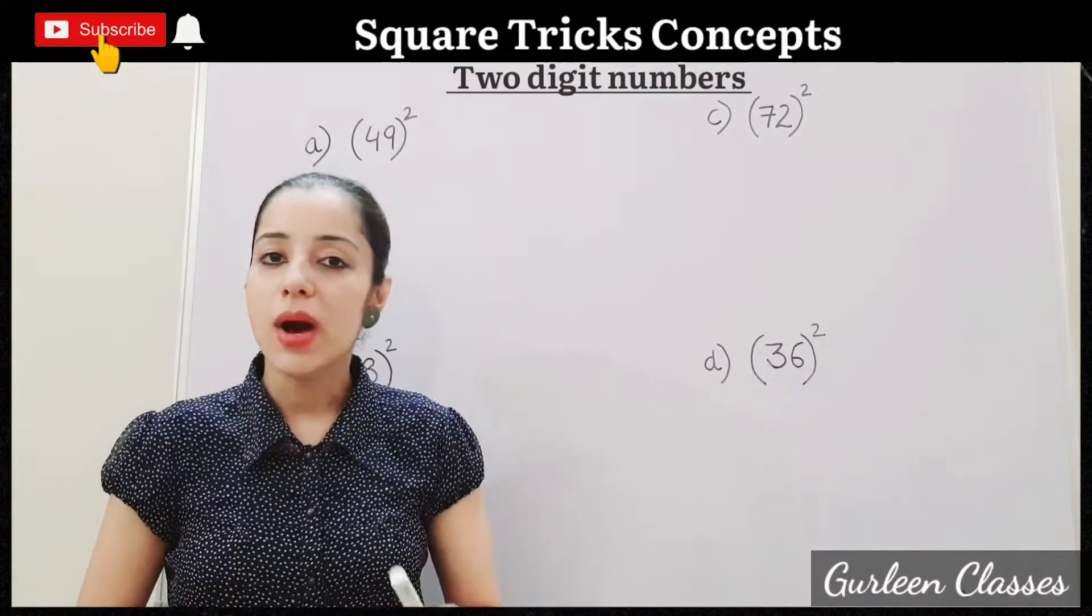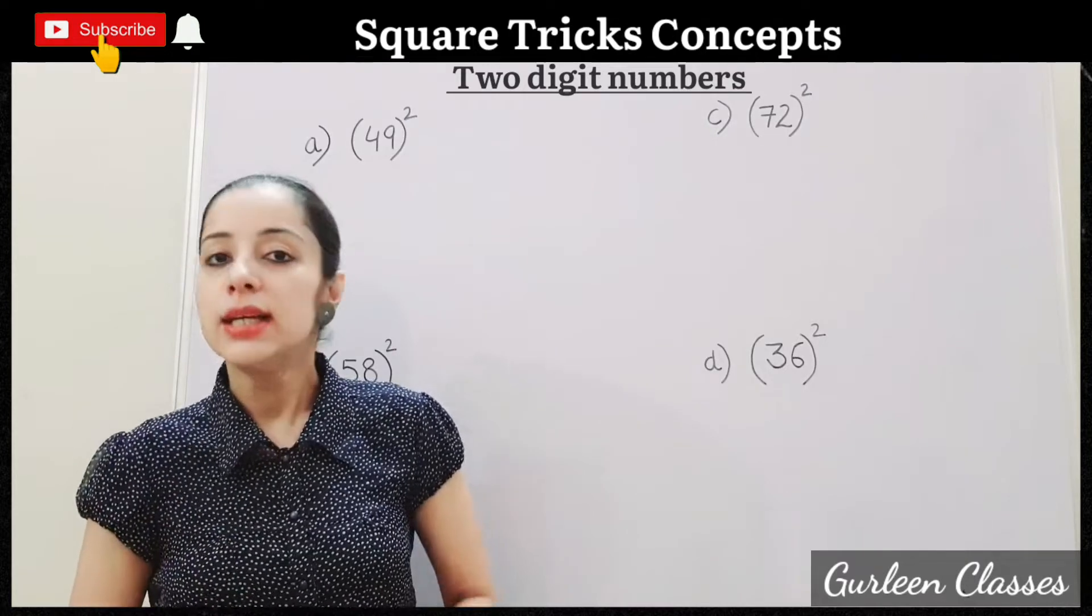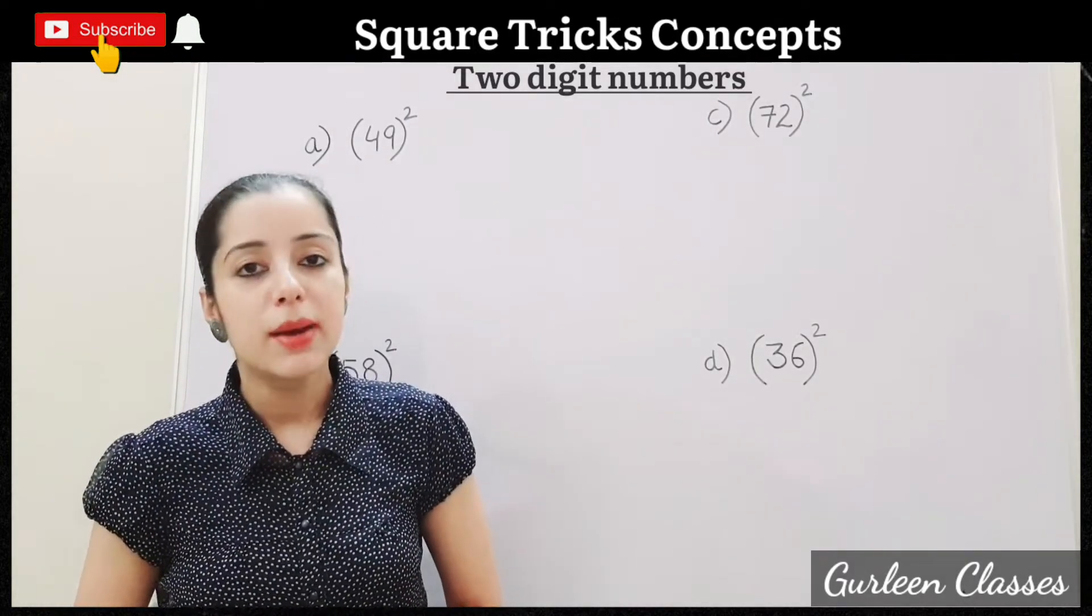Let us learn how to find out squares for the numbers between 1 to 1000 in just a few seconds. So students, what are squares? Square means to multiply a given number two times.